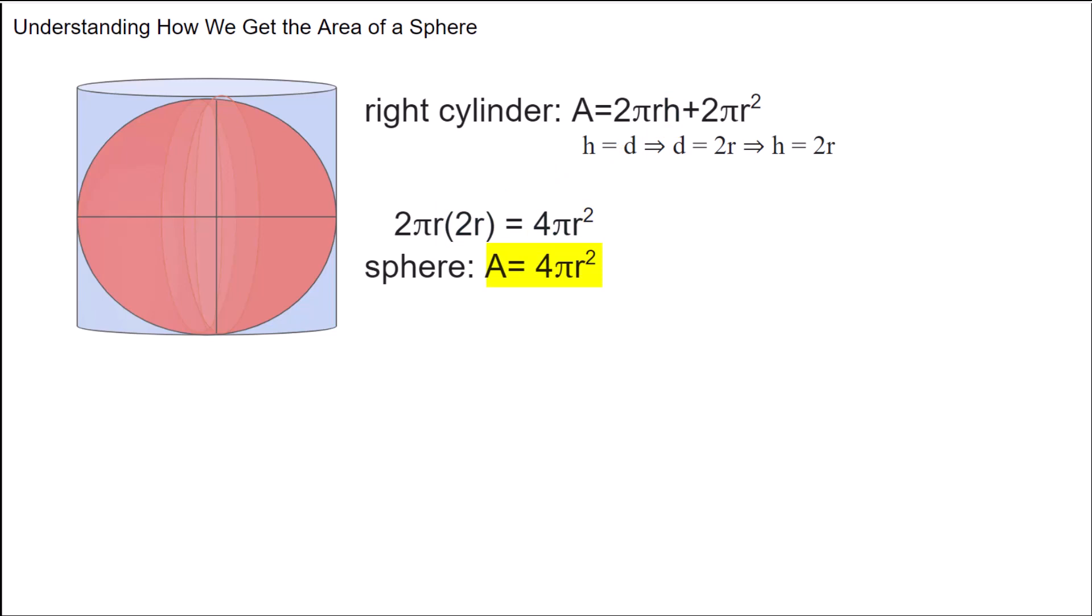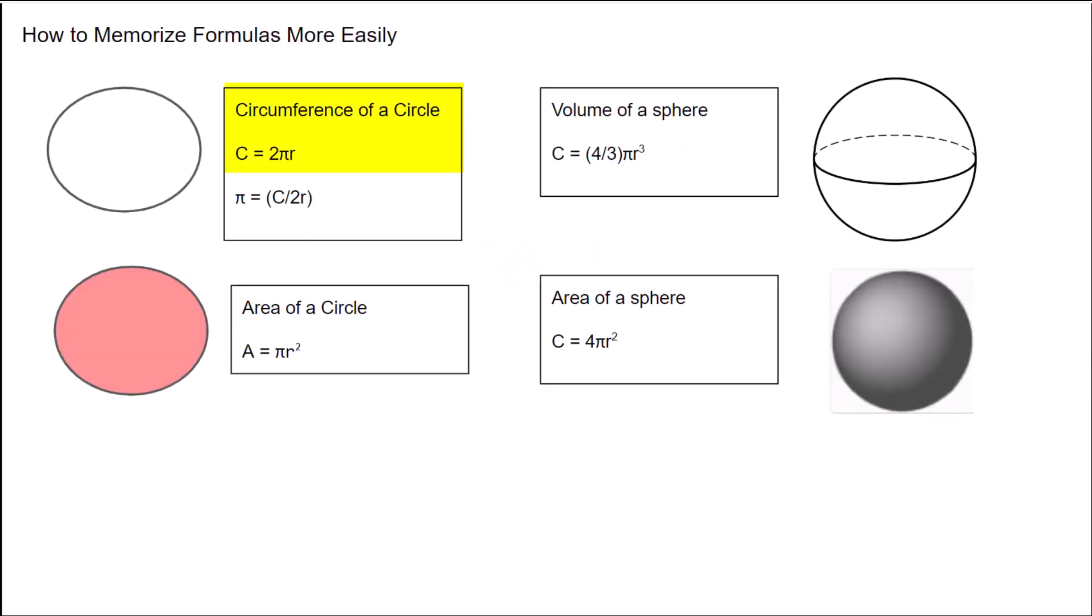Let's talk a little bit about how to keep some of these formulas straight. We talked about the formula for finding the circumference of a circle, which we determined to be 2πr. Then we talked about finding the area of a circle, which is πr². And just now we talked about how to find the area of a sphere, which is 4πr². The other important measurement of a sphere is the volume, and the formula for that is 4/3πr³.